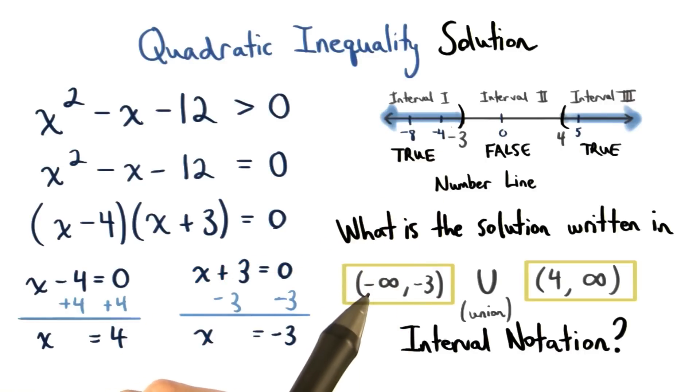For the first interval, we would have negative infinity to negative 3. We use parentheses on each end since we don't include these values.